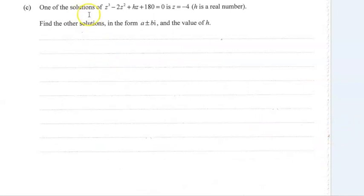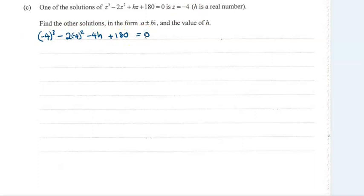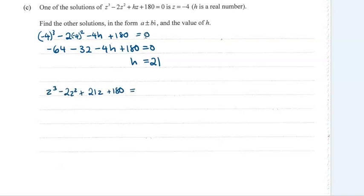For part c, we have a cubic equation and we're given that z is minus 4 as one of the roots. We need to find the other solutions and the value of h. First, we substitute minus 4 into the equation to work out h — that gives us h equals 21. Setting this up algebraically, the cubic has a factor of z plus 4 because minus 4 is a root, and the other factor must be a quadratic.